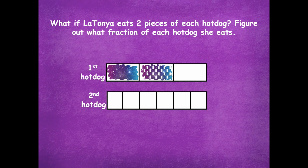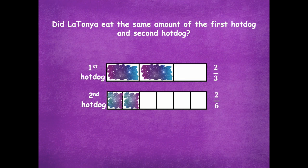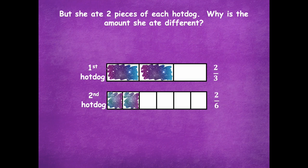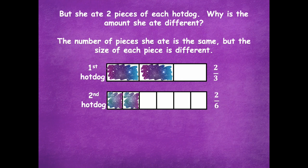She ate two pieces from the first hot dog, which is two-thirds, and she eats two pieces from the second hot dog, which we know is two-sixths. Did LaTonya eat the same amount of the first hot dog and the second hot dog? Nope, she sure didn't. But she ate two pieces of each hot dog — so why is the amount she ate different? Well, the number of pieces she ate is the same, but the size of each piece is different.